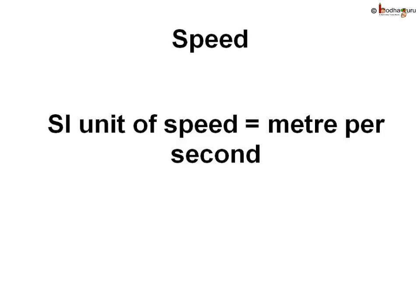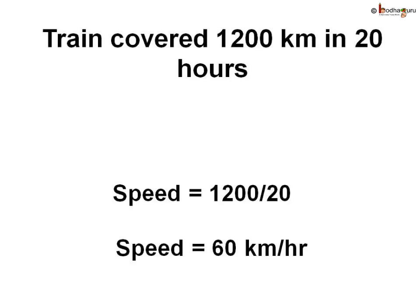Speed could also be expressed in other units such as meter per minute or kilometer per hour. The SI unit of speed is meter per second. Other units of speed are kilometer per hour, miles per hour, meter per minute, centimeter per second, etc.